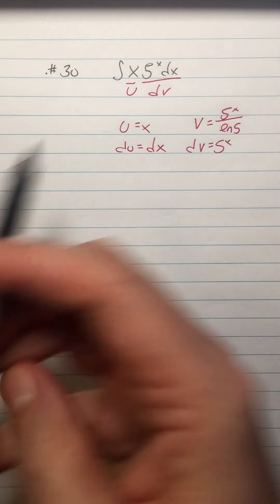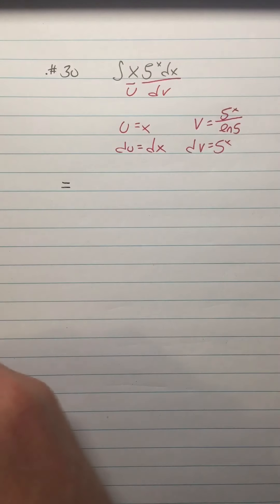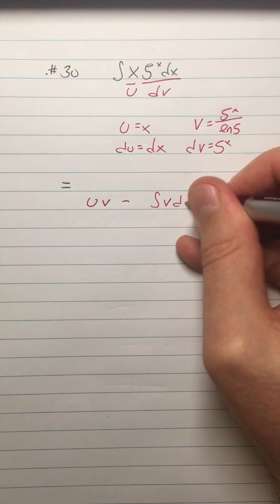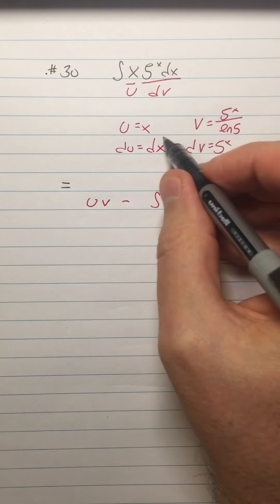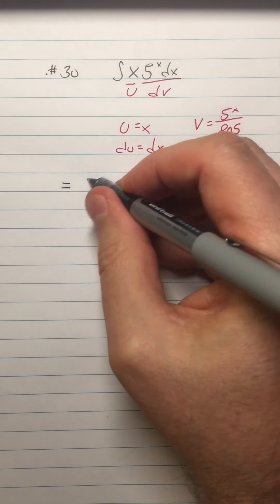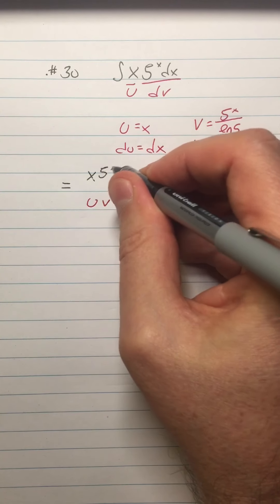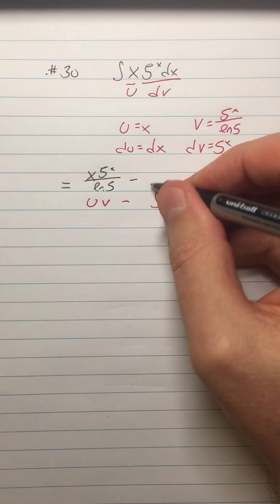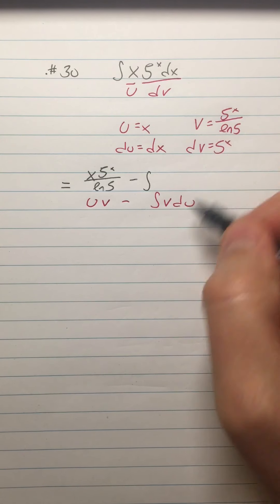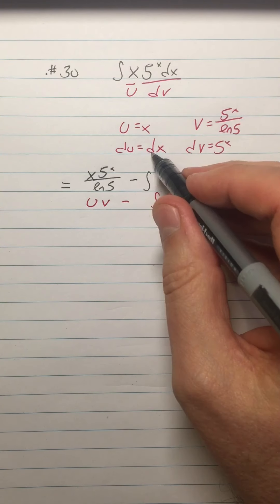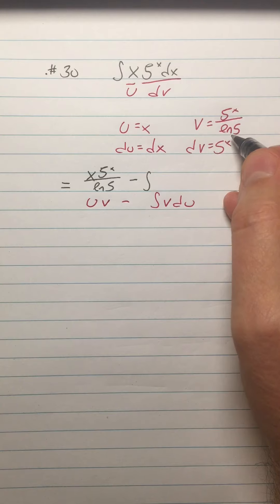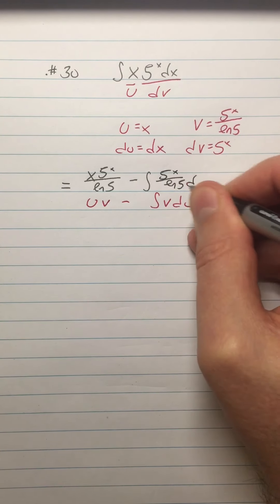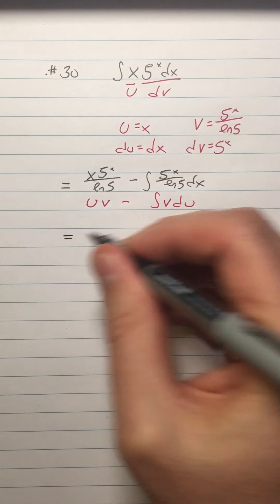That's the whole key to that one. So then, my integral that I had at the beginning is equal to, if I think of uv minus the integral of vdu, that's what the whole thing is, x times five to the x over ln 5. So x five to the x over ln 5. There's lots of different ways to write that minus the integral of vdu. So vdu. So it's going to be five to the x over ln 5 dx. Five to the x over ln 5 dx. Sorry, that's a little sloppy.